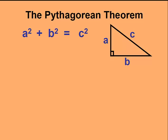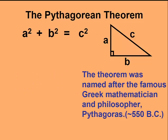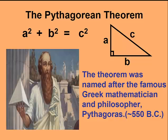The Pythagorean Theorem is one of the most famous mathematical formulas. It relates the three sides of a right-angle triangle, and we use it to find the missing side. The Pythagorean Theorem was named after the famous Greek mathematician and philosopher, Pythagoras, around 550 BC.